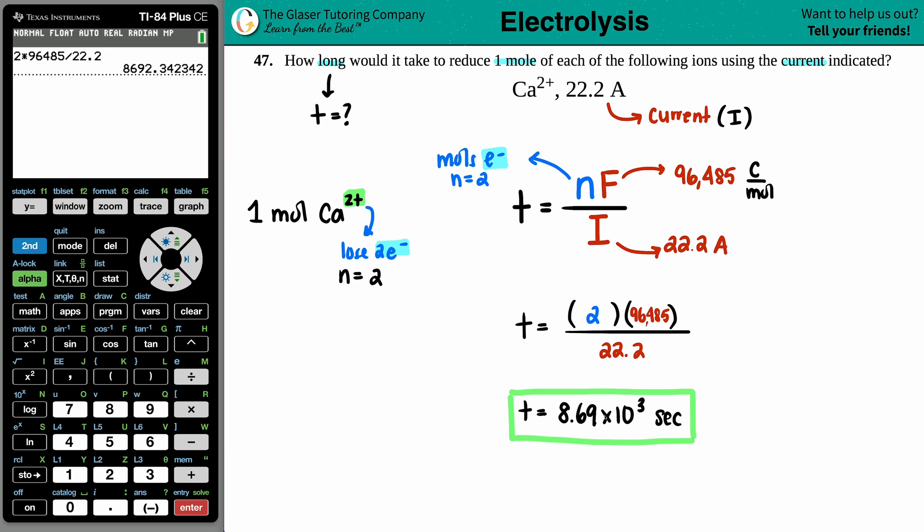I mean, 8,690 seconds. That's a lot. It didn't specifically say whether we wanted it in minutes or hours, but just know that if you wanted it in minutes, you could always divide by 60. And then if you want it in hours, you divide that number by 60 again. So if I divide it by 60,